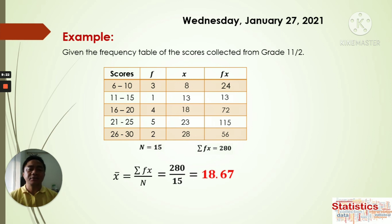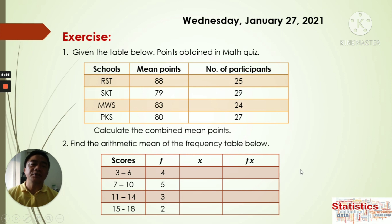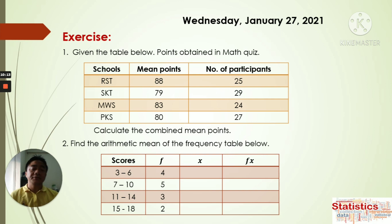So, do you have any questions? If you don't have any questions, we have your activity for today. We have two exercises: the first is about the combined arithmetic mean, and the second is about the arithmetic mean for grouped data. I hope you understand our lesson for today. Please answer this. I will give you time to answer until 12 noon today. If not submitted on time, then minus 1.